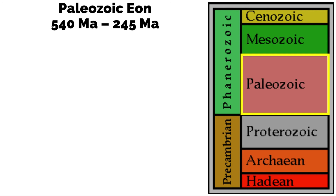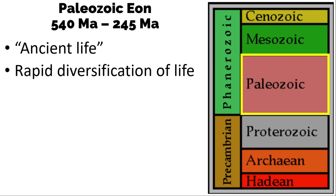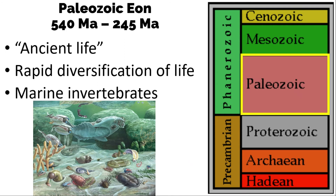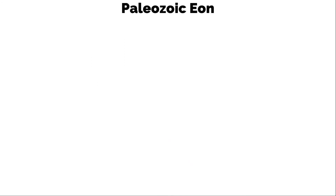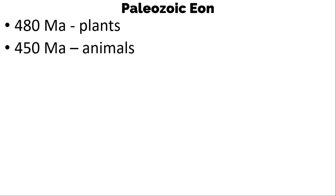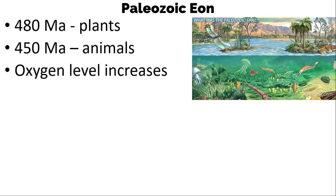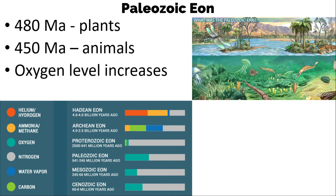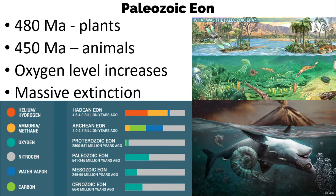Under the Phanerozoic, we have the Paleozoic Era, from 540 MA to 245 MA, also called the age of ancient life. Here, rapid diversification of life is represented by the Cambrian fauna, with dominance of marine invertebrates. At 480 MA, plants colonized land, and at 450 MA, animals started to colonize the land. Oxygen level in the atmosphere approaches present-day concentration. This era ended with a massive extinction — the Great Permian Extinction.